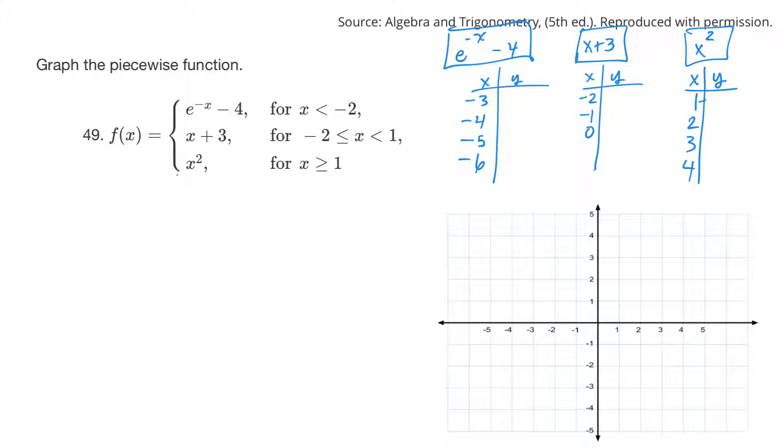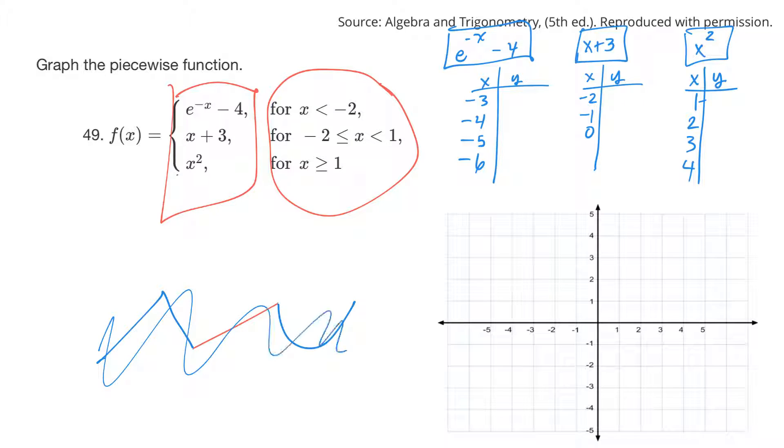Now, here's a question where they ask us to graph a piecewise function. And all that means is that for a different domain or different values of x, the function is different. So rather than being like a linear function for the whole thing, they chop that up and say, only for part of that is it linear. And then the other part, it might do something else, like this might be a quadratic, or this one down here might be an absolute value upside down or something.